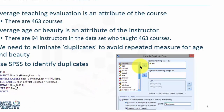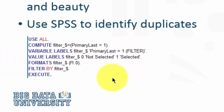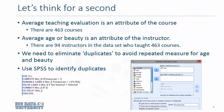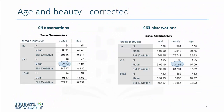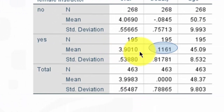I have used the identify duplicate cases algorithm in SPSS to subset the data set. The algorithm generates a script which you can highlight and run to get the same effect. When we use 94 observations where no instructor is repeated, the average beauty score is 0.25. When we look at 463 courses, the average value is 0.11.